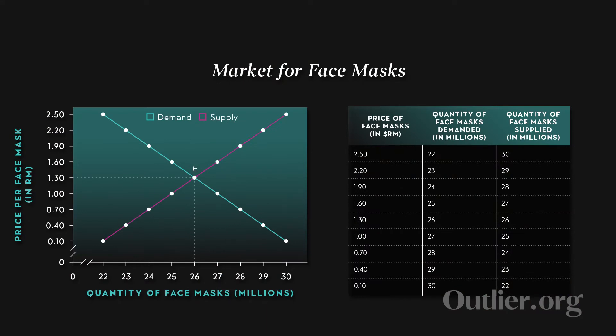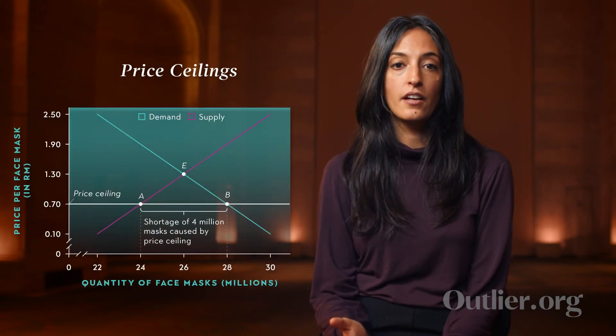Here we can see the supply and demand curves for three-ply face masks in Malaysia. The Malaysian government instituted a price ceiling in this market, saying that people couldn't charge more than 70 sen — that's the equivalent of cents for the Malaysian currency, the ringgit. This market would have cleared at an equilibrium price of one ringgit 30 sen, at which 26 million face masks would have been bought and sold. But because the government set a maximum legal price below that, the equilibrium is no longer legal, and the invisible hand will push the market as close to equilibrium as it can while still legal — meaning the price charged is the 70 sen price ceiling.